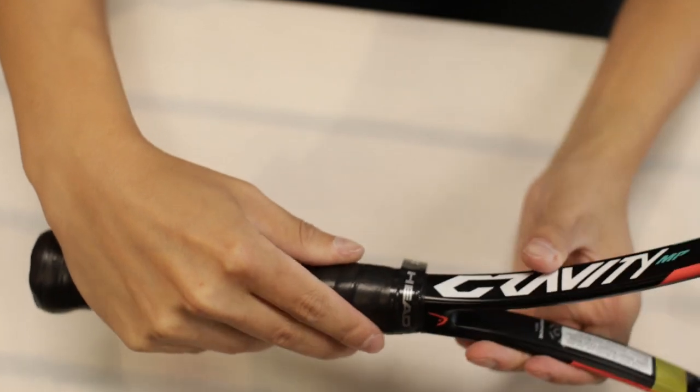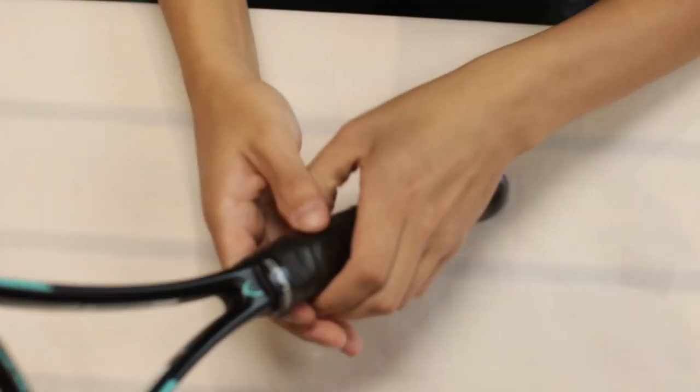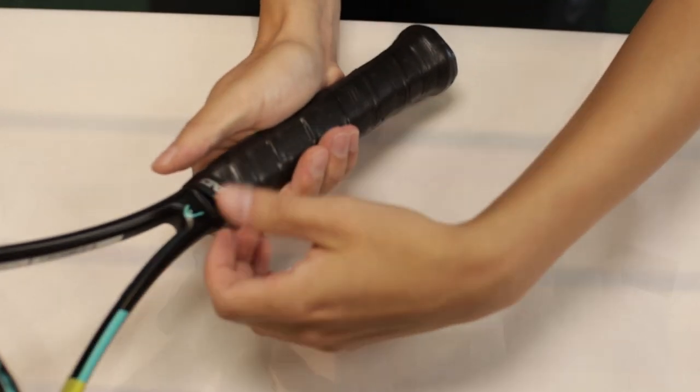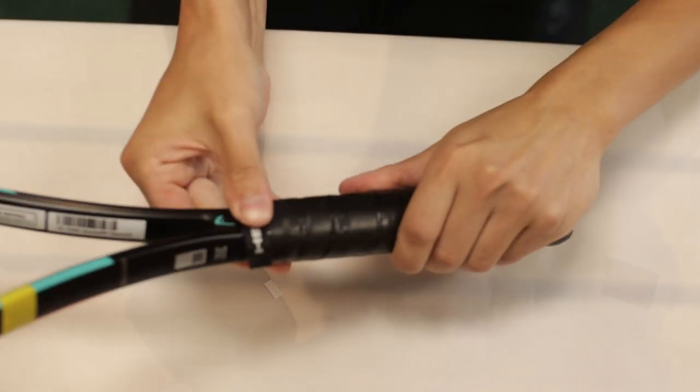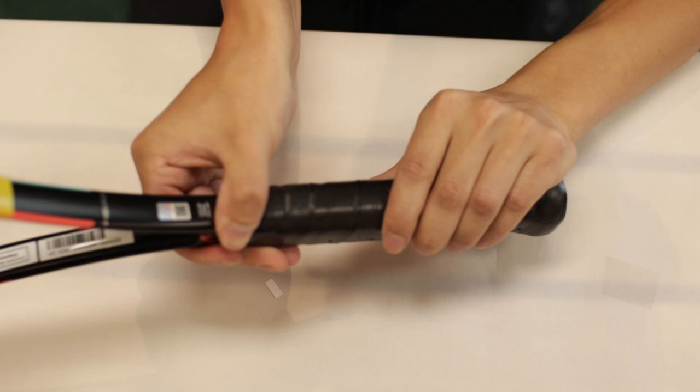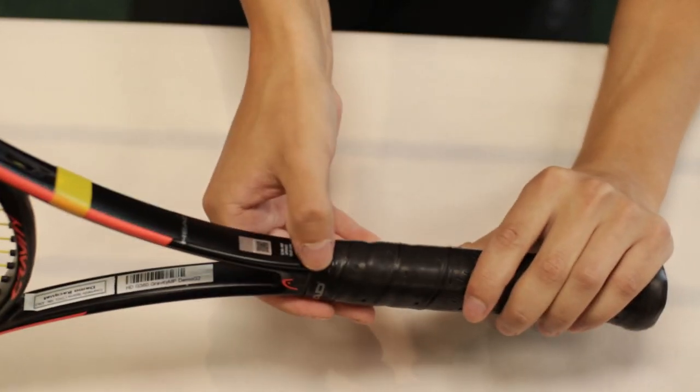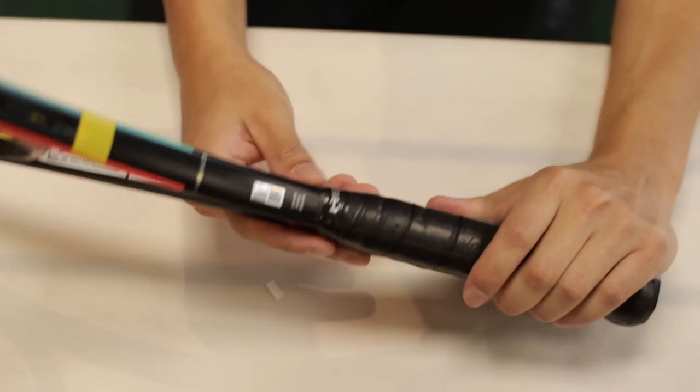Alright so just when you have a little bit left you want to stop pulling and just push it down with your thumb. The less you pull at the end as you finish, the less likely you are to have the tape start detaching from where it was stuck.